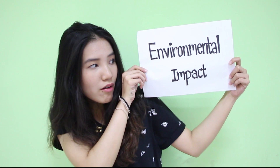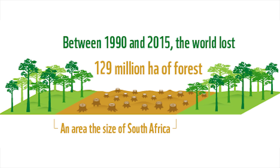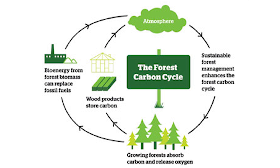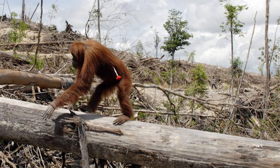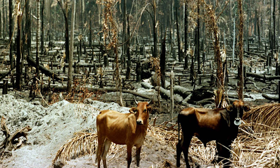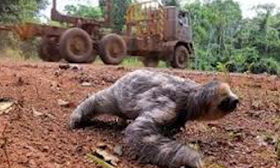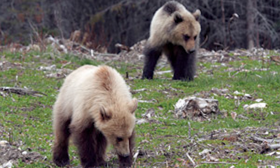Environmental impact: Deforestation causes a lot of bad influence on the environment. Trees absorb carbon dioxide, and as human activities produce more and more carbon dioxide into the atmosphere and most trees are cut down, we hinder the planet's ability to balance carbon dioxide levels. Another impact of clearing forests is the weakening of biodiversity, as animal habitats are reduced. Every year, thousands of different species go extinct around the world due to deforestation.